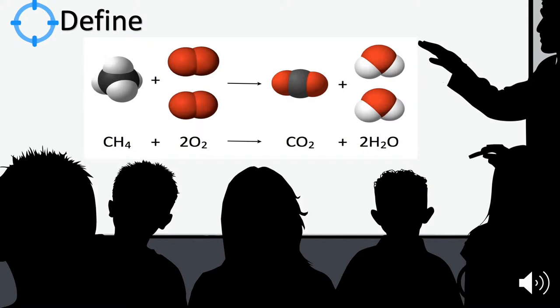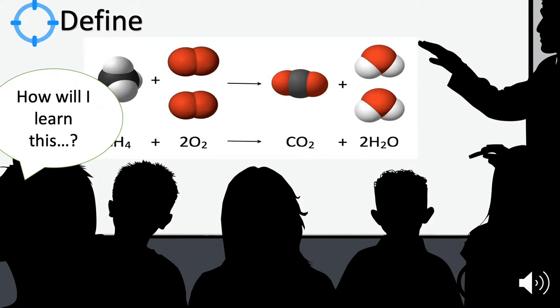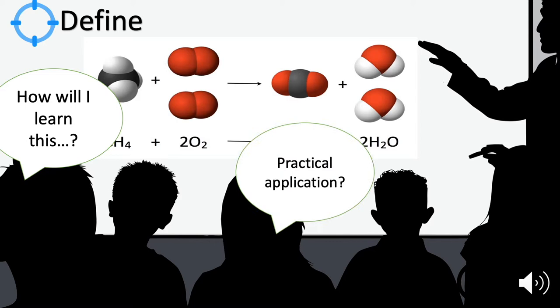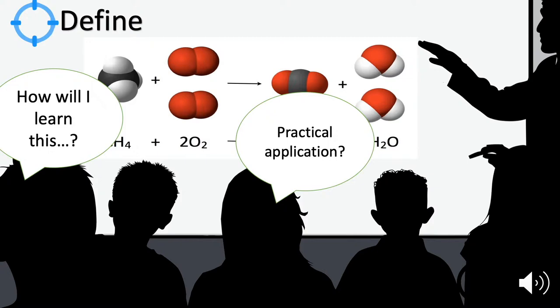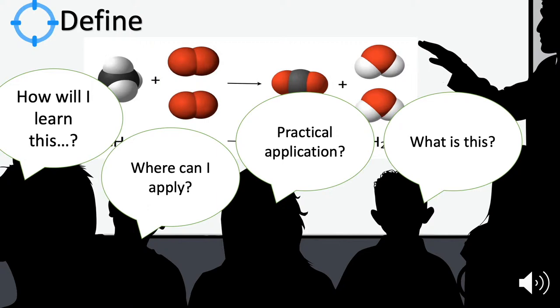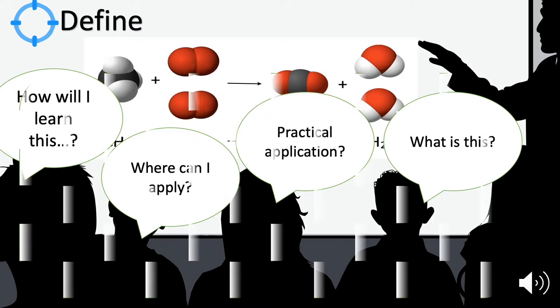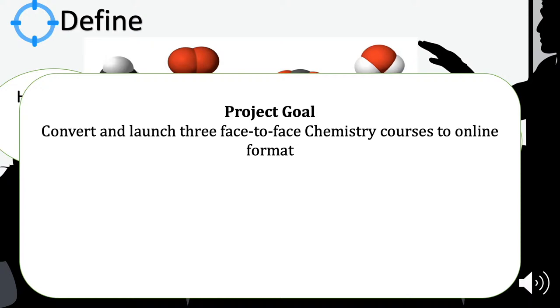Let's begin by defining the problem that faced this project management team. Undergraduate students in the chemistry department of a large university complained that their lecture sessions are straight from the text. Therefore, they don't attend the lecture sessions and are unable to learn chemistry concepts perfectly. Students also complained that they need more time on the hands-on labs. Our project presents the solution to this problem. As per the statement of stakeholders, the theory courses are converted to online, which will allow students to spend more time in the lab applying the concepts.